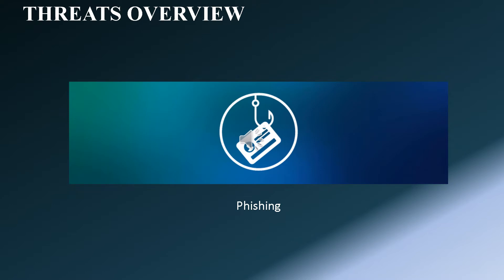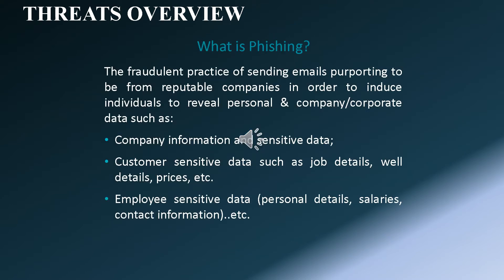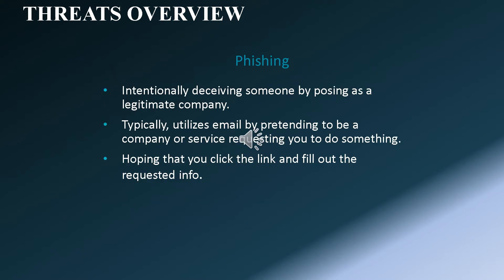The second type of malicious threat is phishing. What is phishing? Phishing is the act of setting the bait, trap, and casting it out into a wide ocean, hoping that something bites. By definition, it is a fraudulent practice of sending emails purporting to be from reputable companies in order to induce individuals to reveal personal information, such as passwords and credit card numbers. Phishing intentionally deceives someone by posing as a legitimate company, typically utilizing email by pretending to be a company or service, requesting you to do something for their personal gain.